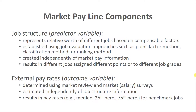The second variable is the outcome variable, which corresponds to external pay rates — or market pay rates. These are determined using some type of market review process, typically market salary surveys. Market surveys are useful tools for determining how much competitors or similar organizations are paying for the same or similar jobs — often called benchmark jobs, which are key or common jobs within or across industries. External pay rates should be estimated independently of the job structure information.